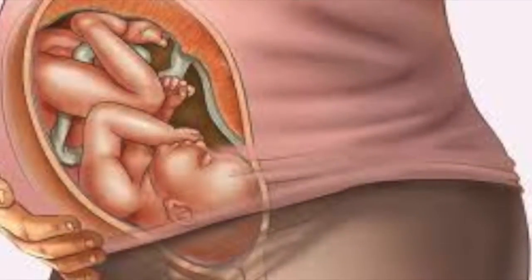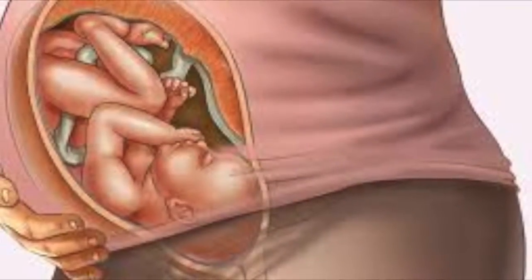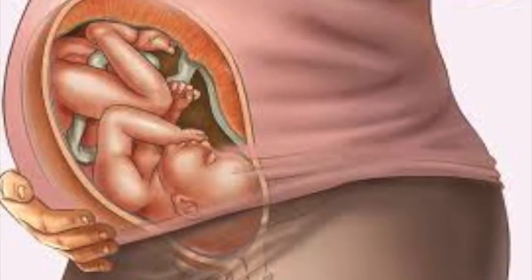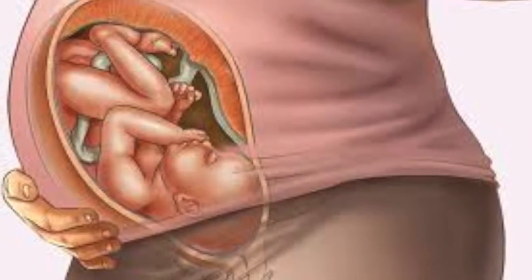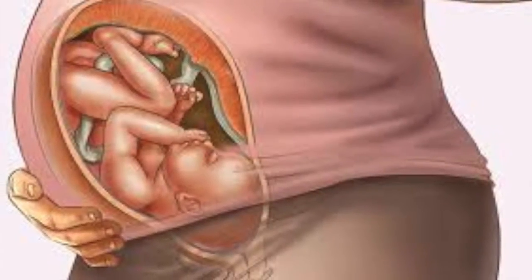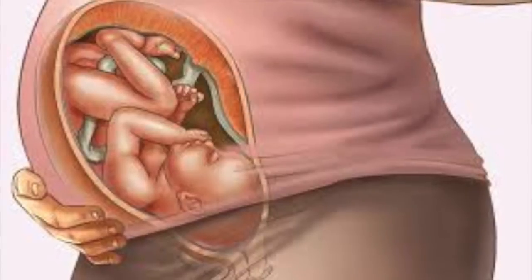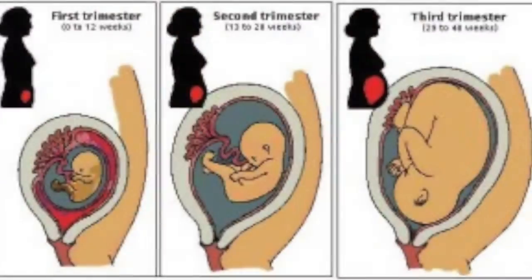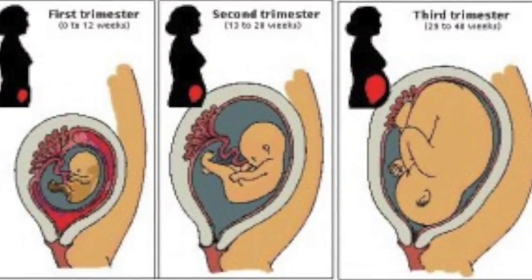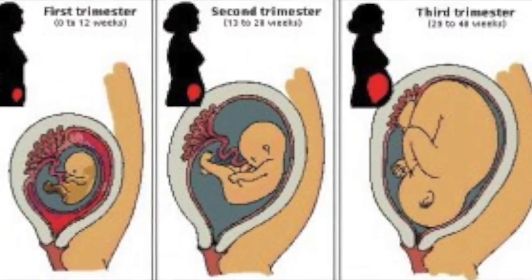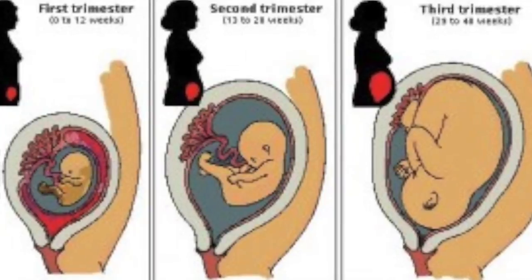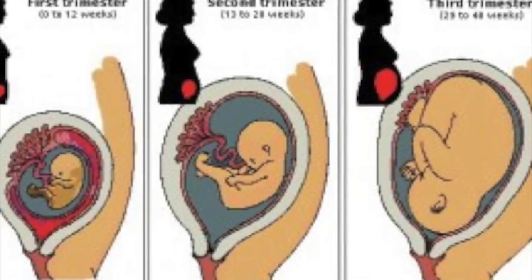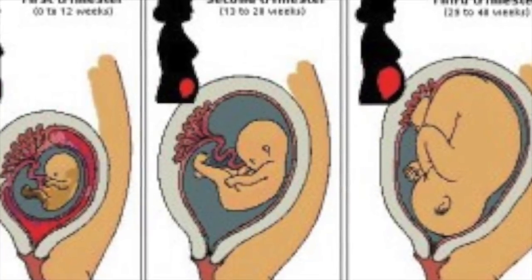A zygote develops into a fully formed fetus in about 38 weeks. Human pregnancies can be divided into trimesters, or three periods, that are each three months long. During those months, hormones help to keep the pregnancy going and stimulate the embryo to develop.